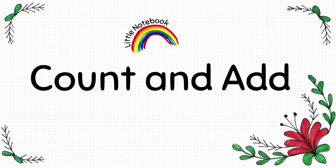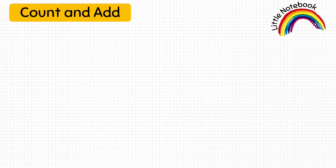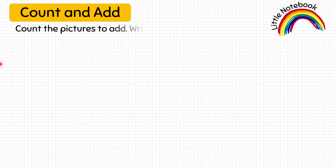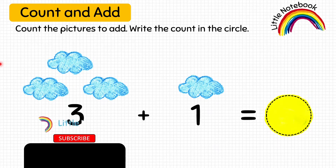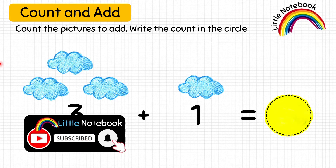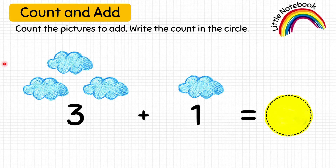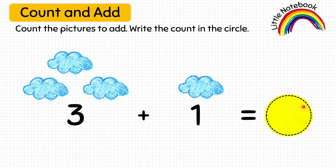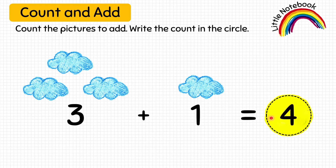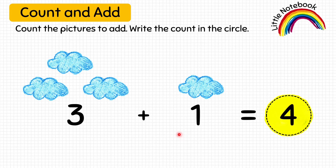Now the second worksheet is Count and Add. Again the kid has to count the pictures to add, but at the same time will learn to identify numbers and how to add them. For example, here are three clouds plus one cloud — how many clouds? Let's count: one, two, three, four. Kid will write four, and will learn that three plus one equals four.